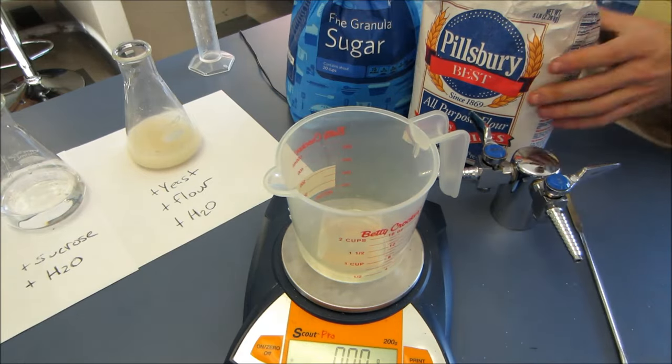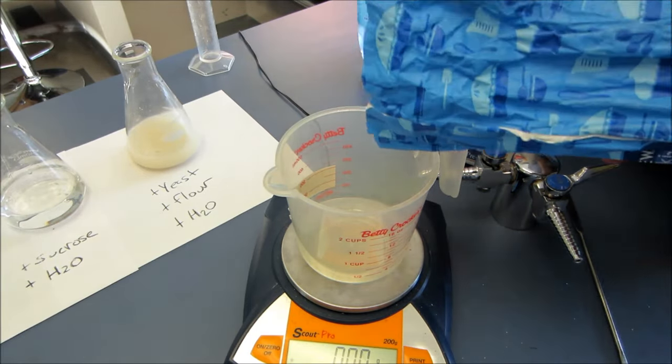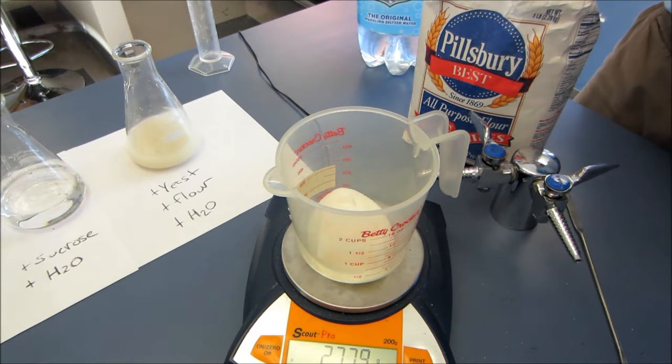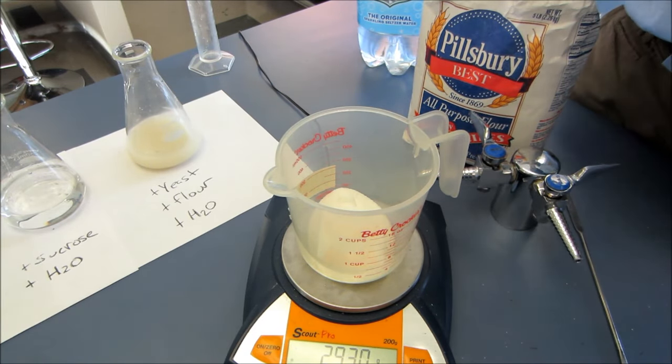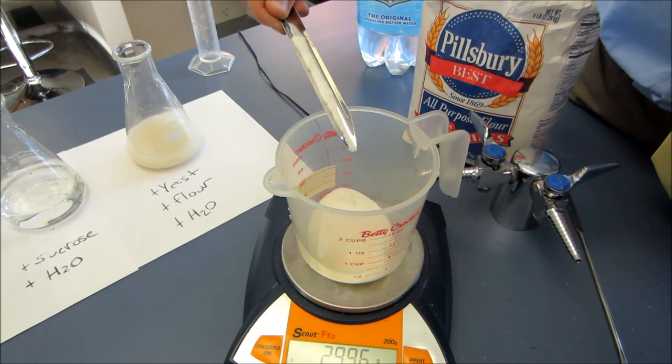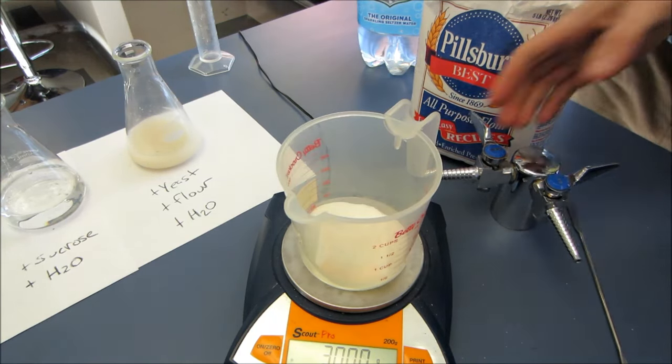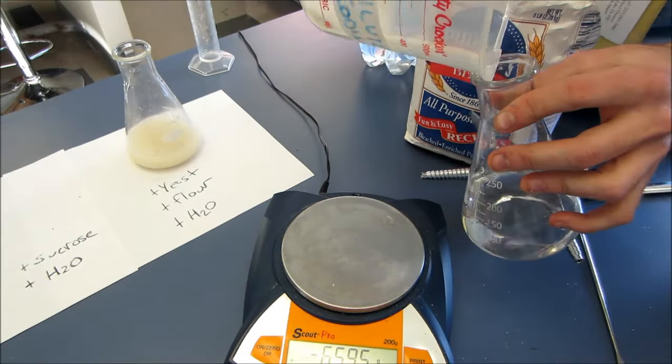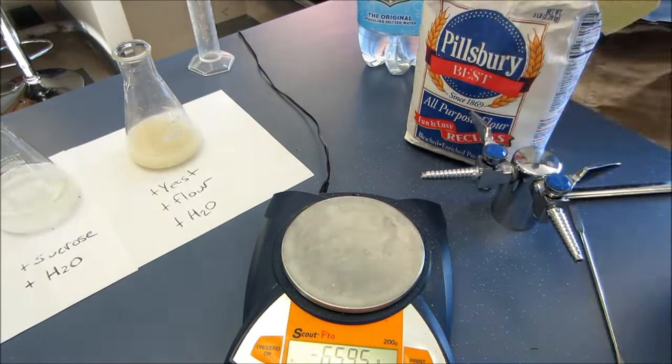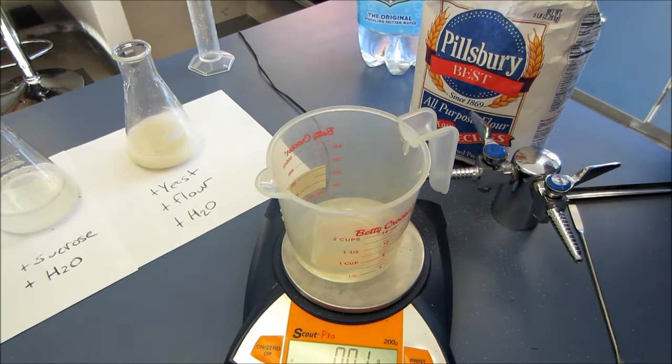I'm also going to add some food for the yeast to some of these flasks, not all. My two foods are sugar and just to have something to compare it to, I'm going to compare it to flour. Now remember sugar is a carbohydrate called sucrose. It's basically one fructose and one glucose molecule stuck together. Its chemical formula is C12H22O11.